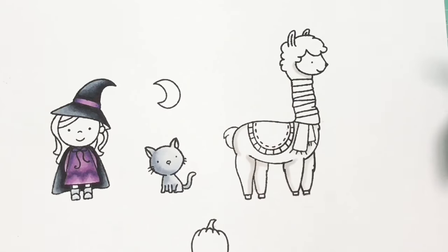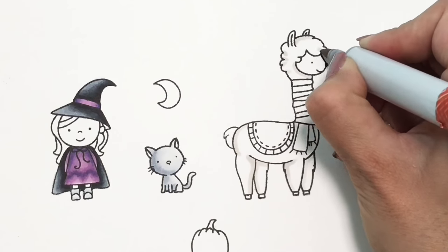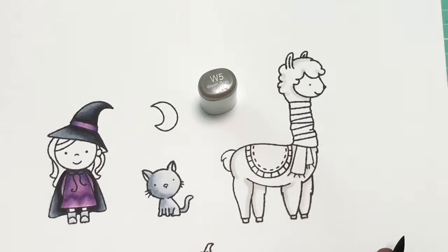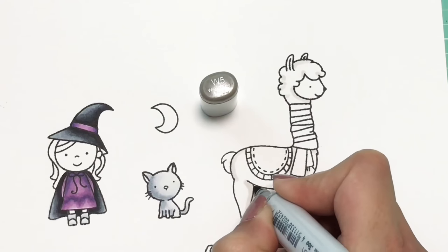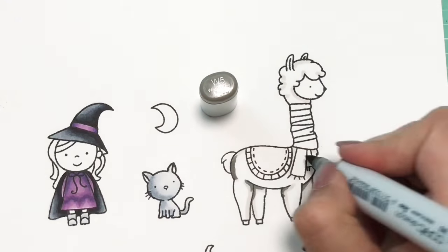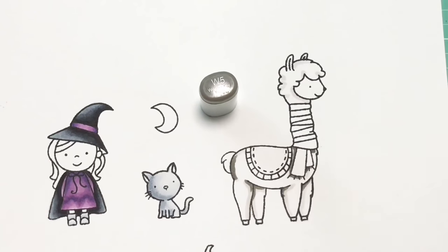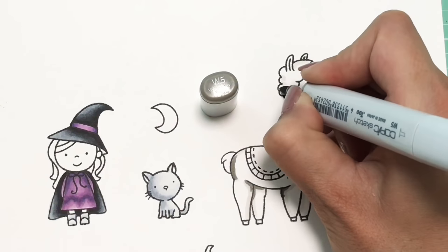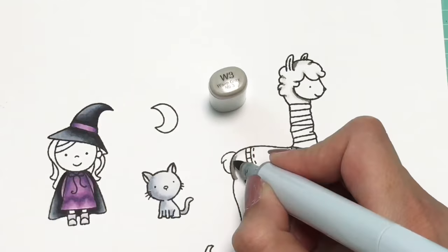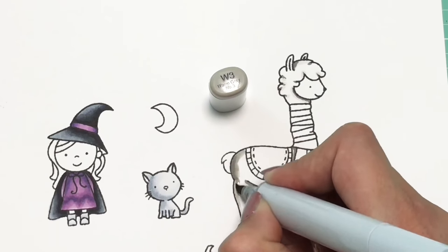Now I'm coming in to color my llama and I really wanted for her or him, whatever, to be a white color. But I got a little heavy handed here with my W's and she turned out a little bit darker than I wanted. But it doesn't matter. She still turned out cute. This can happen sometimes. You just roll with it. It's not that big of a deal.